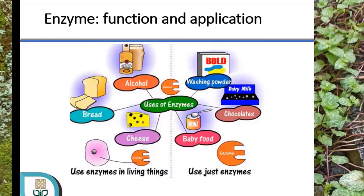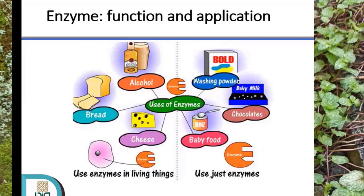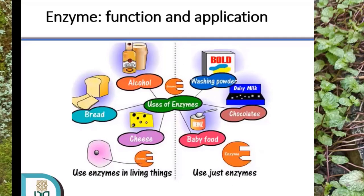Kalau kita bicara tentang enzim, sebenarnya ada dua cara pemanfaatan. Yang pertama adalah menggunakan enzim bersama dengan organisme penghasilnya. Misalnya ketika kita membuat roti, kita menambahkan ragi, yang sebenarnya adalah sekumpulan mikroba yang menghasilkan enzim tertentu, kemudian enzimnya kita manfaatkan untuk fermentasi adonan roti. Contoh lain ketika kita melakukan fermentasi alkohol menggunakan Saccharomyces cerevisiae, keseluruhan organismenya yang digunakan, tetapi sebenarnya yang kita manfaatkan adalah enzimnya.